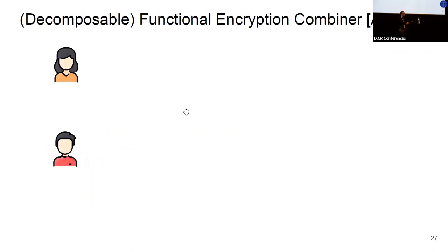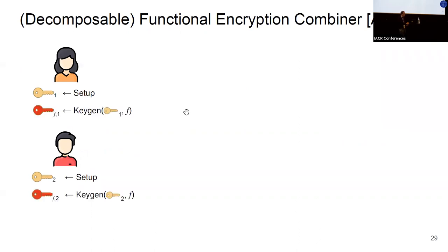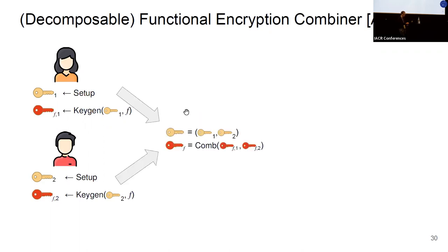Functional encryption combiners adapt this to the multi-party setting. Both parties can sample their master secret keys and create functional key shares — using their individual master secret keys together with a global two-input function to generate these shares. These functional key shares and master secret keys can be combined (this is what decomposability refers to) to obtain the full functional key.